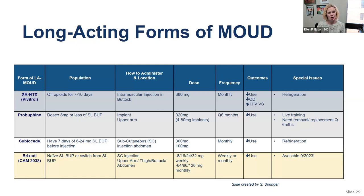Probuphine is an implant in the upper arm, dosed every six months, and has been shown to decrease non-medical opioid use — some training required. Sublocade is a subcutaneous injection in the abdomen, recommended with seven days of sublingual buprenorphine first, though studies show shorter transitions are being explored. It is a monthly dose and reduces non-medical opioid use, though it requires refrigeration. Brixia is a subcutaneous injection, weekly or monthly, decreases use, and is available this month.